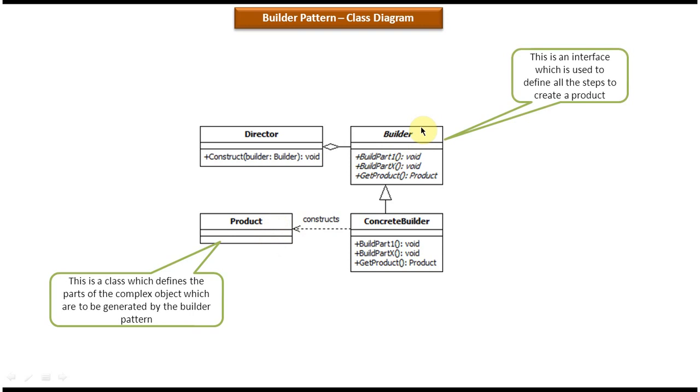And on the right side top you can see the builder interface. And this builder interface defines all steps which is used to create the final product. You can see build part 1, build part x, etc. And the get product method, if you call this method it will return the final product object. So builder is an interface, so all these methods are abstract methods.